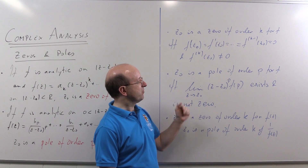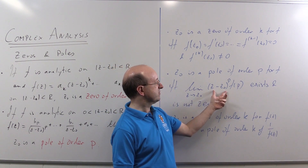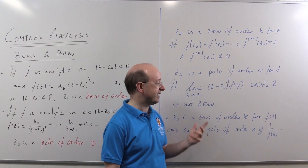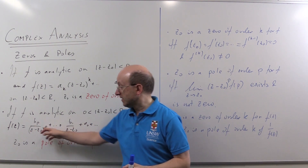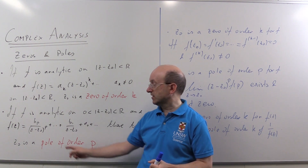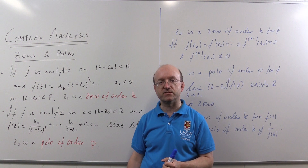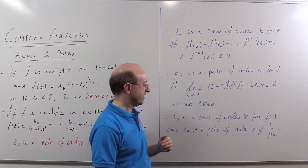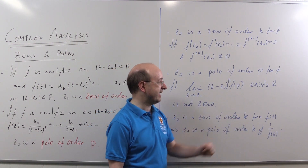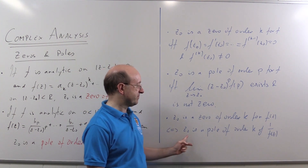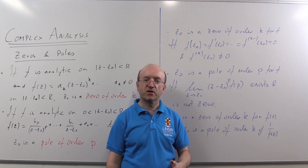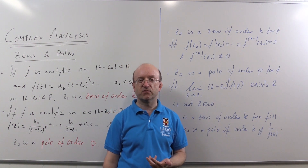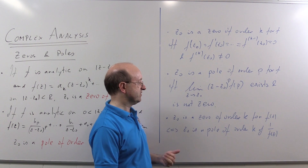On the other hand, z₀ is a pole of order p for f if, when we multiply through by (z − z₀)^p and then take the limit, we get a limit that exists and furthermore is not zero. All we're really doing here is clearing the fractions off the series and taking the limit to get rid of everything after z₀. The reason these two things are intimately connected is that if you have a zero of order k for the function f, then it will be a pole of order k for 1/f. And conversely, a pole of order p gives you a zero of order p for the reciprocal.